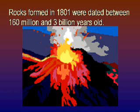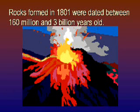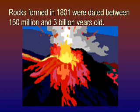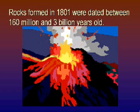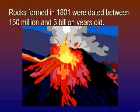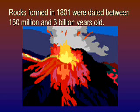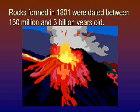Since writing the book, I've come across another example. Steve Austin did samples from Mount St. Helens, which we know erupted on May 18, 1980. Radioactive dating of the lava dome at Mount St. Helens gives an age for the formation of that lava between 0.34 and 2.8 million years. That's pretty inaccurate.